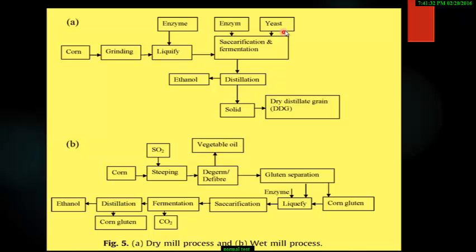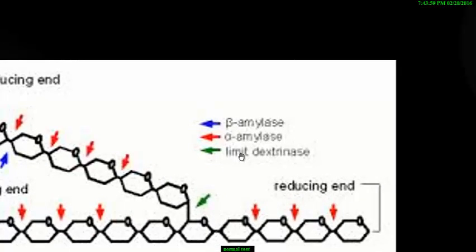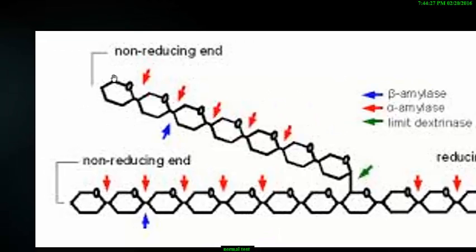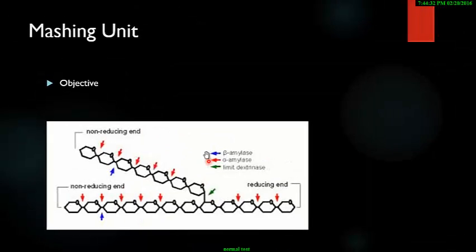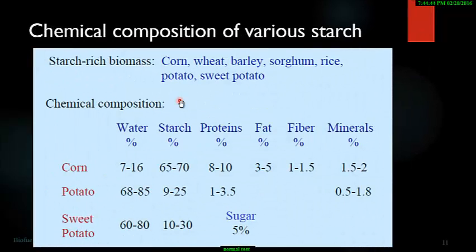Various enzymes are involved in starch breakdown. Limit dextrinase (shown in green) acts on the branching points of sugar units. Alpha-amylase (shown in red) is an endo-amylase that acts between sugar units and breaks the alpha-1,4 glycosidic bonds. Beta-amylase (shown in blue) is an exo-amylase that acts from the outside inward. Together these enzymes break down starch, and subsequent fermentation converts glucose to ethanol.